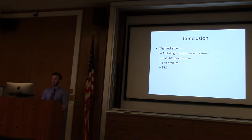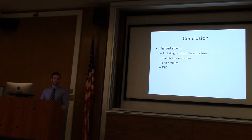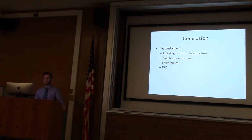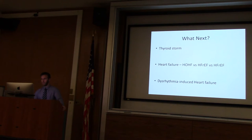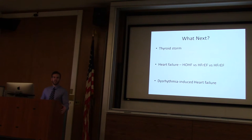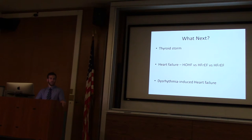Conclusion: thyroid storm, AFib, high-output heart failure, possible pneumonia, liver failure, and DIC. This had been going on for two to three weeks, so there was extensive end-organ damage on exam and on labs by the time he got to the ED. Next: we'll talk about thyroid storm, high-output heart failure — specifically the difference between high-output, HFrEF, and HFpEF — and dysrhythmia-induced heart failure.